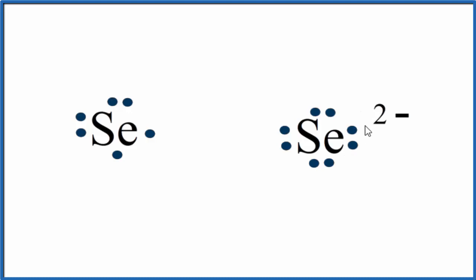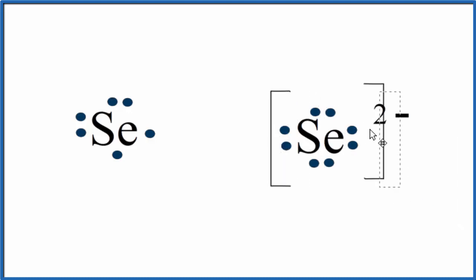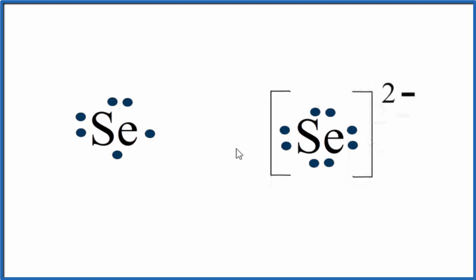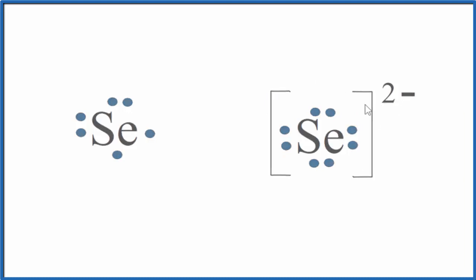We should put brackets around the Se to show it's an ion. So these are the Lewis structures — we have it for neutral Se, and then we have this Se 2 minus ion. This is Dr. B, and thanks for watching.